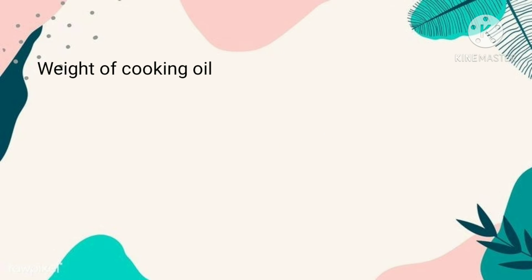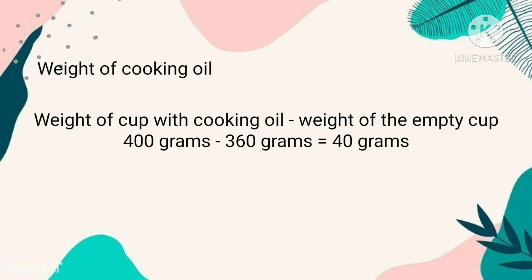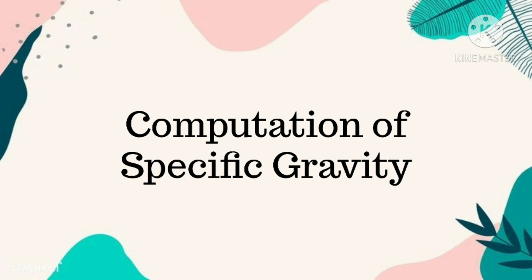To measure the weight of the cooking oil, we will subtract the weight of the cup with oil from the weight of the empty cup: 400 grams minus 360 grams equals 40 grams.